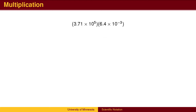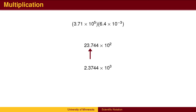When multiplying, we can rearrange the factors to multiply in any order. We can first multiply 3.71 and 6.4, then multiply the powers of 10. Recall that when multiplying numbers, we add exponents. To get to scientific notation, we need to make sure we have only one digit to the left of the decimal, so we move the decimal point one place to the left and adjust the power of 10 by one factor of 10. If we are concerned with significant digits, we should round so as to have only two significant digits. One of the initial factors had only two significant digits, so the product may not be accurate after the second significant digit. In general, the number of significant digits in the answer should be the smallest number of significant digits in any of the factors.